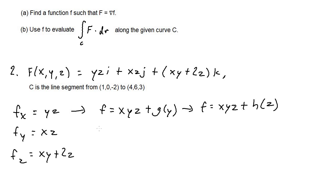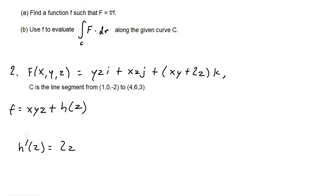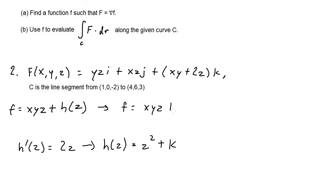Now differentiating f with respect to z gives f sub z equals xy plus h prime of z. Setting xy plus 2z equal to xy plus h prime of z, the xy terms cancel, leaving h prime of z equals 2z. Integrating gives h(z) equals z squared plus k. So the final function is f equals xyz plus z squared plus k.